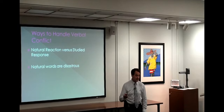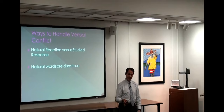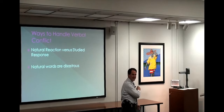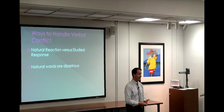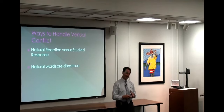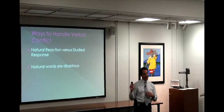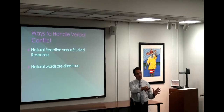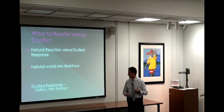I've been married for 27 years and can tell you natural words are disastrous. Once I asked my wife to do something; she didn't. I said 'I guess I'll have to do it myself.' She said 'I guess you will.' I've also learned this with my kids — I'm convinced aliens take children over around age 14 or 15 and return them around 24. Somewhere in between, their natural words can be disastrous.